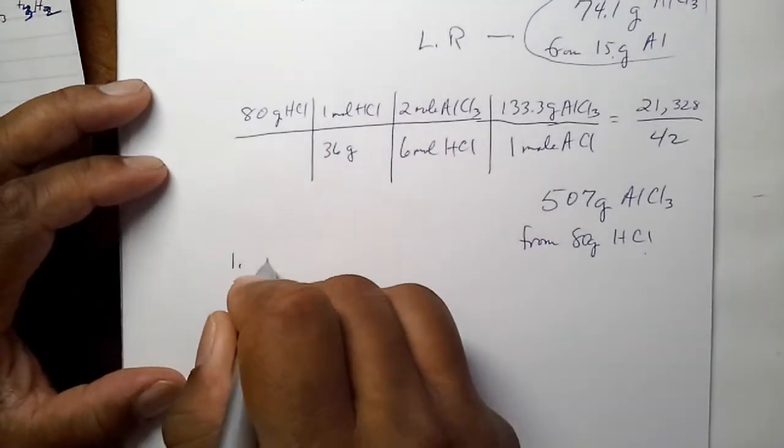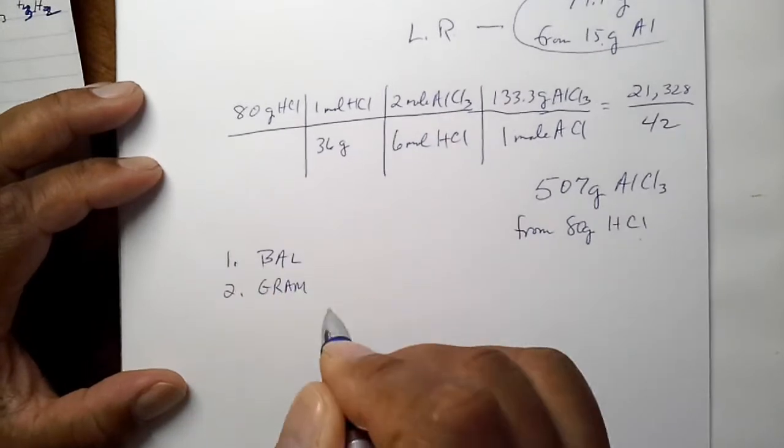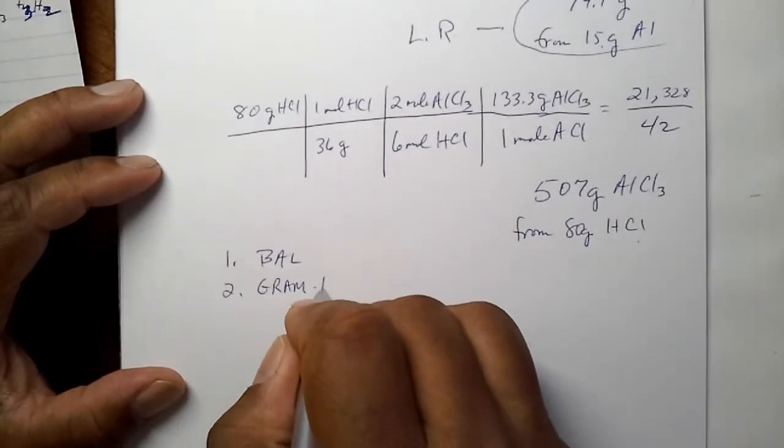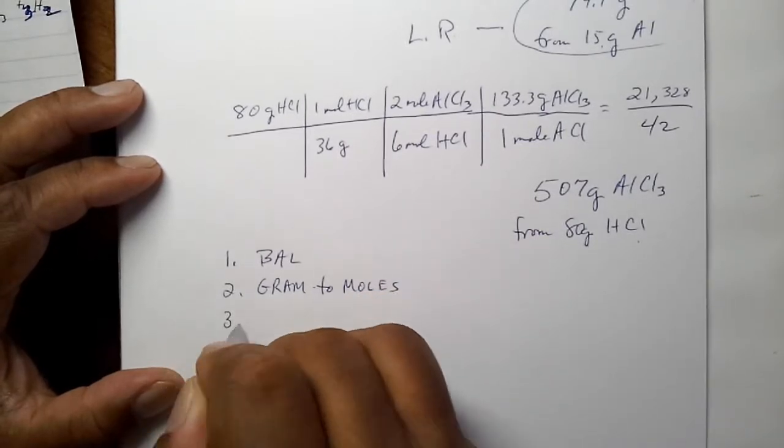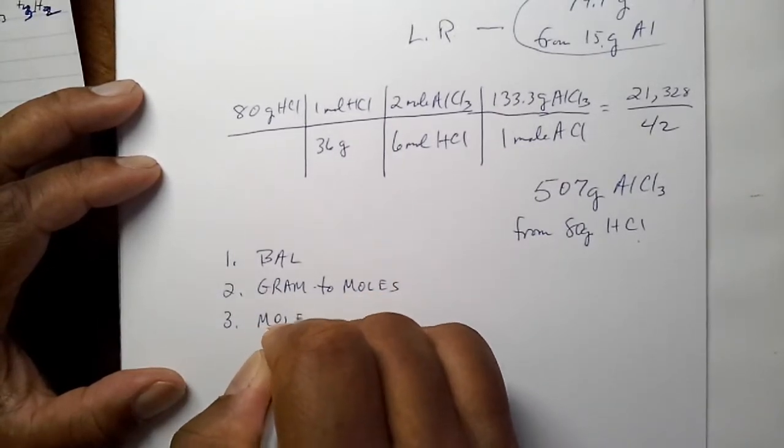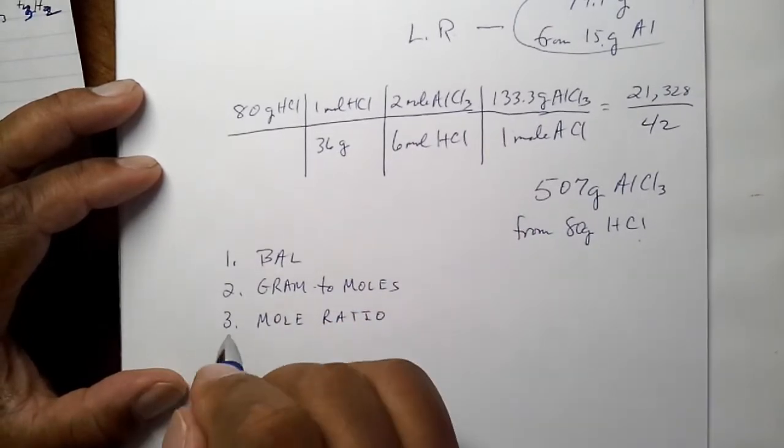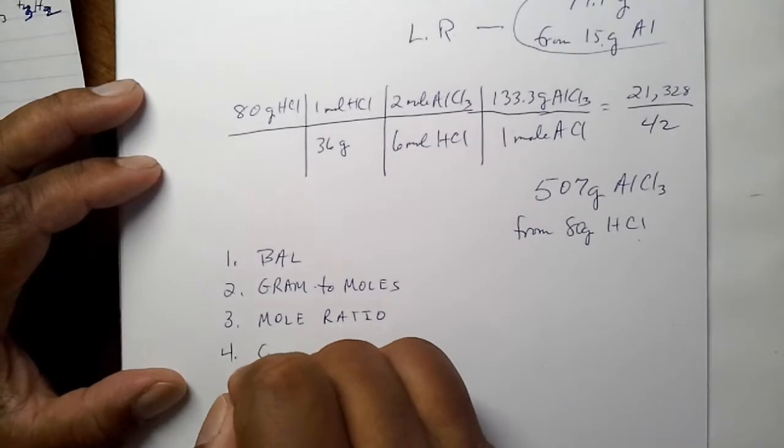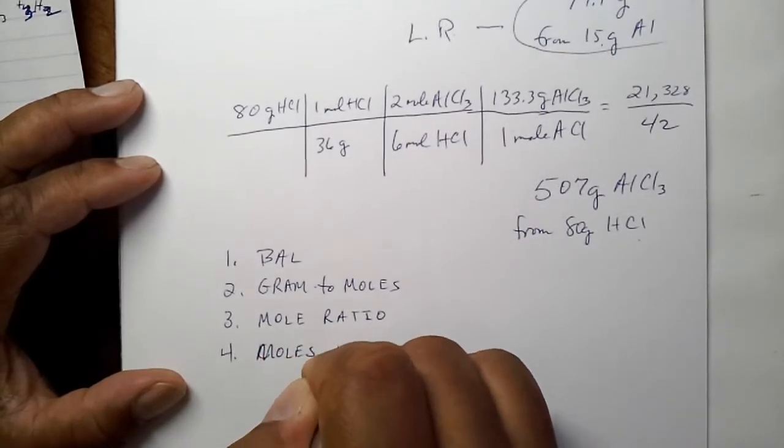First step is to balance. Second step, if necessary, is to go from grams to moles. The third step is to determine your mole ratio, which is simple, from your balanced equation. And your fourth step is to convert your moles back to grams, if that's what the question asks for.